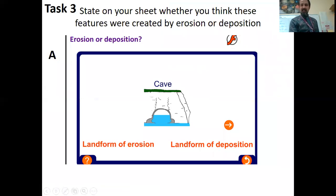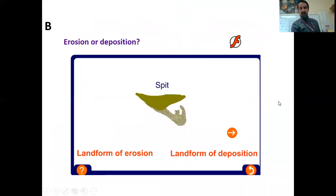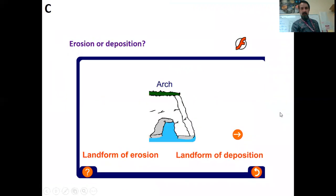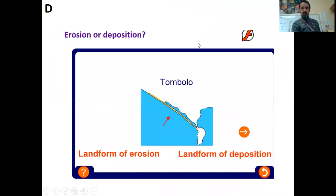Task three. Now you're going to see five images and I want you to state on your sheet whether or not they are created by erosion or deposition. So it says A, B, C, D, and E.